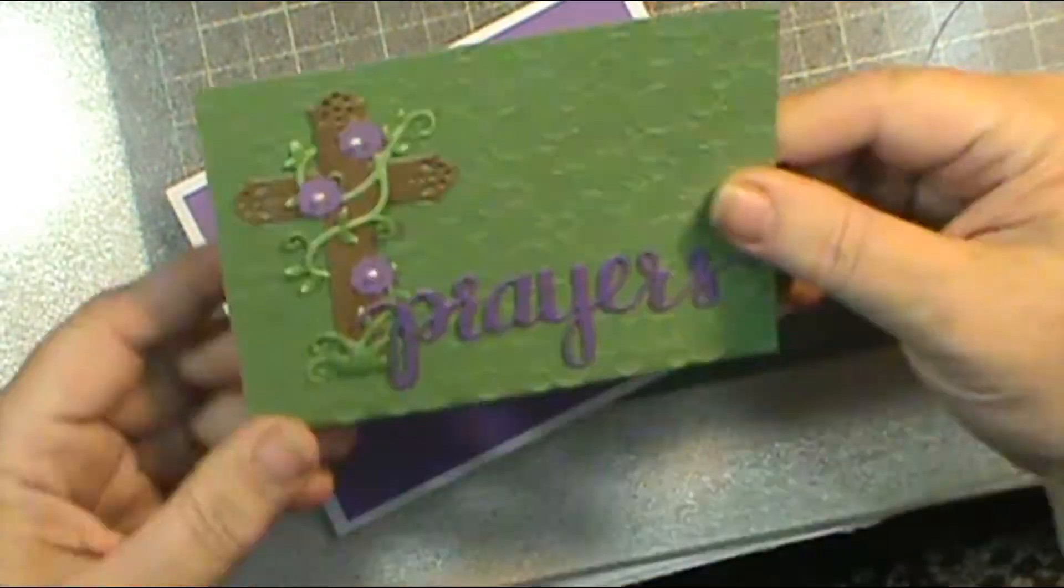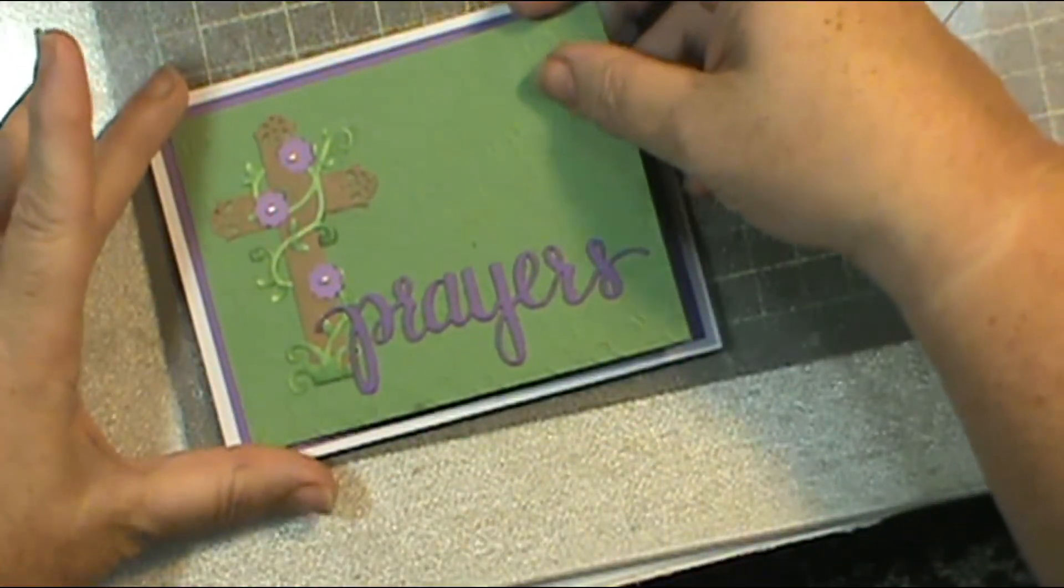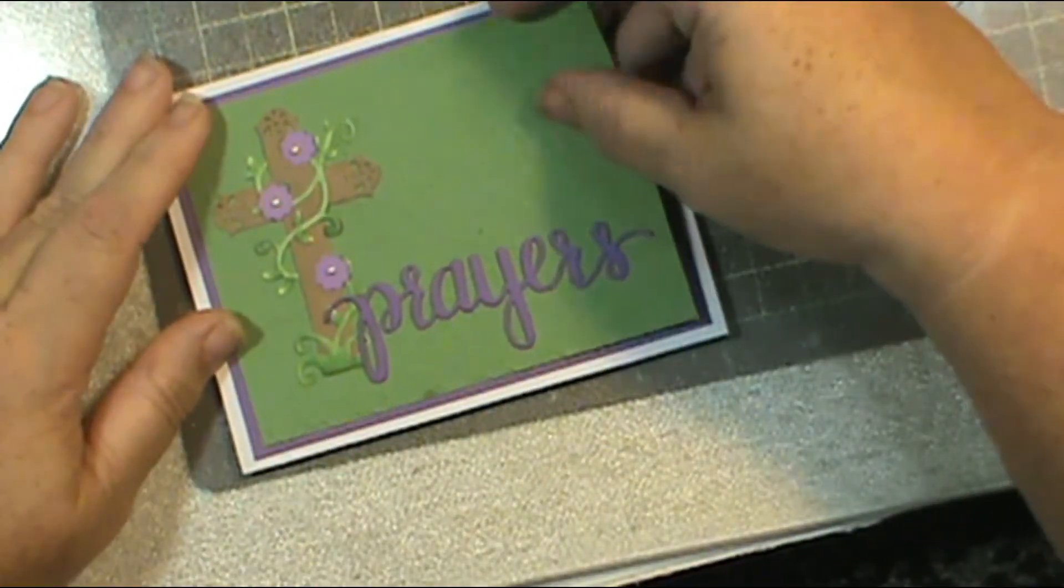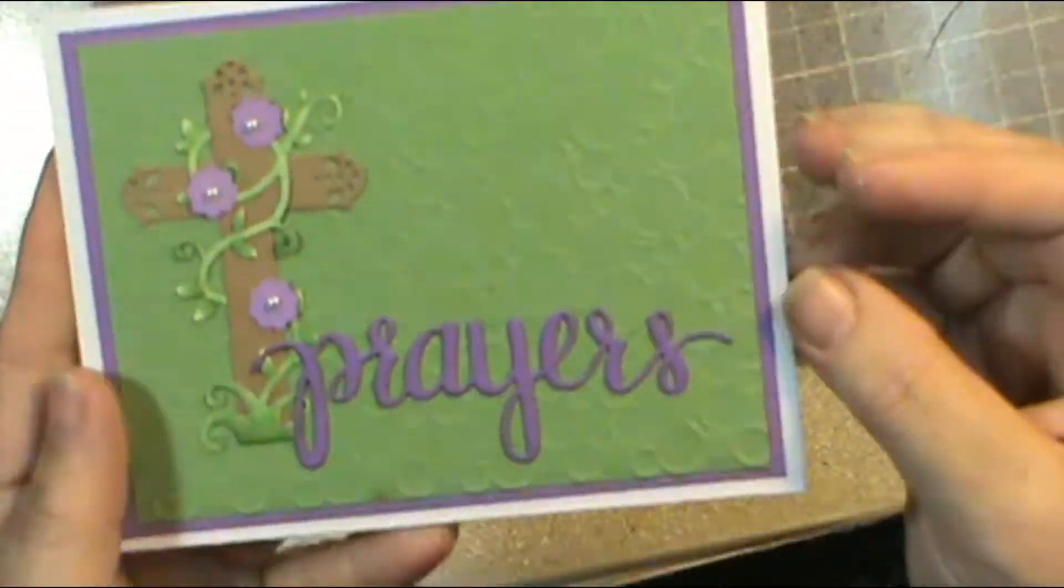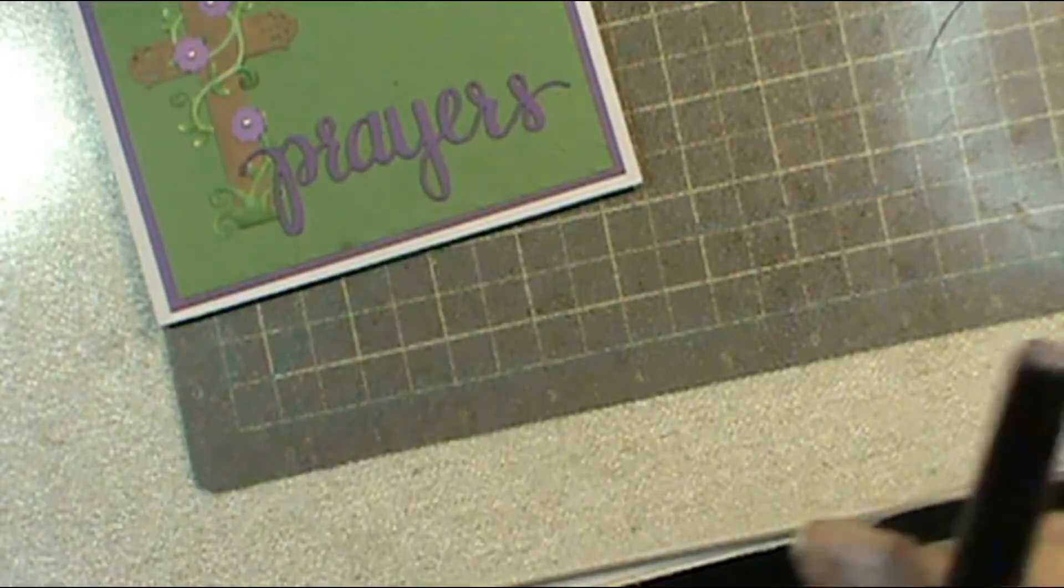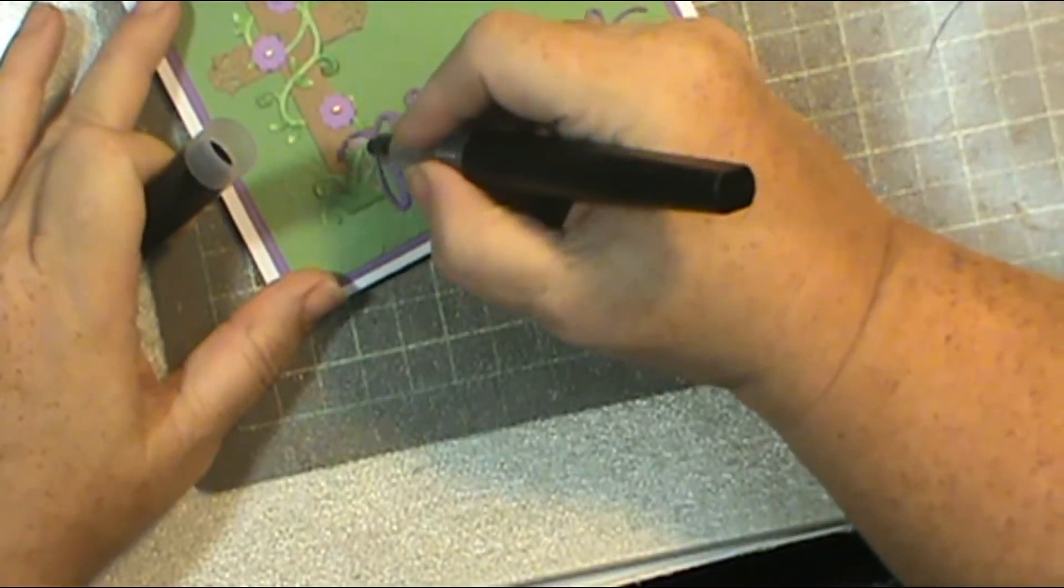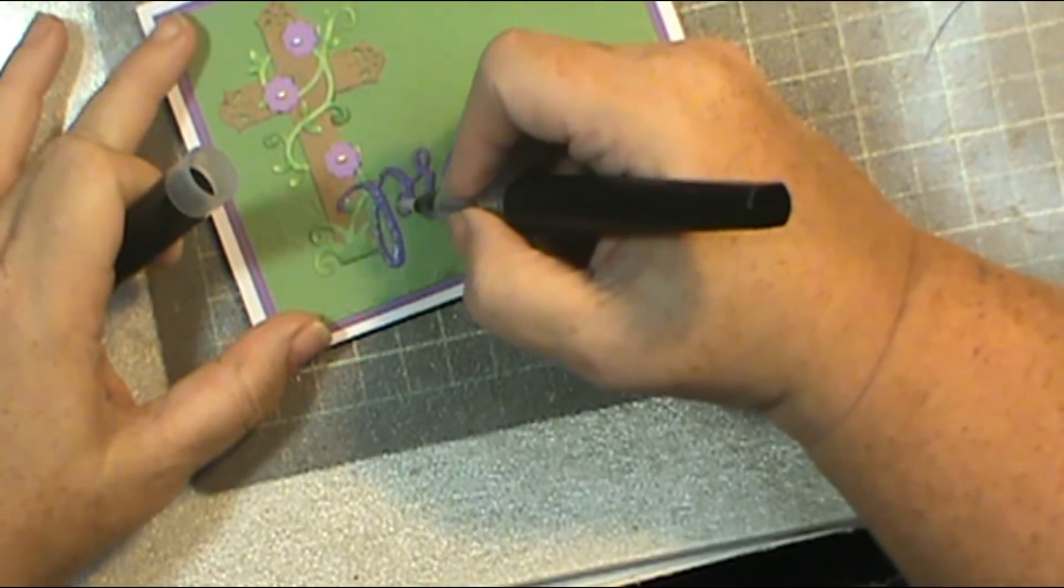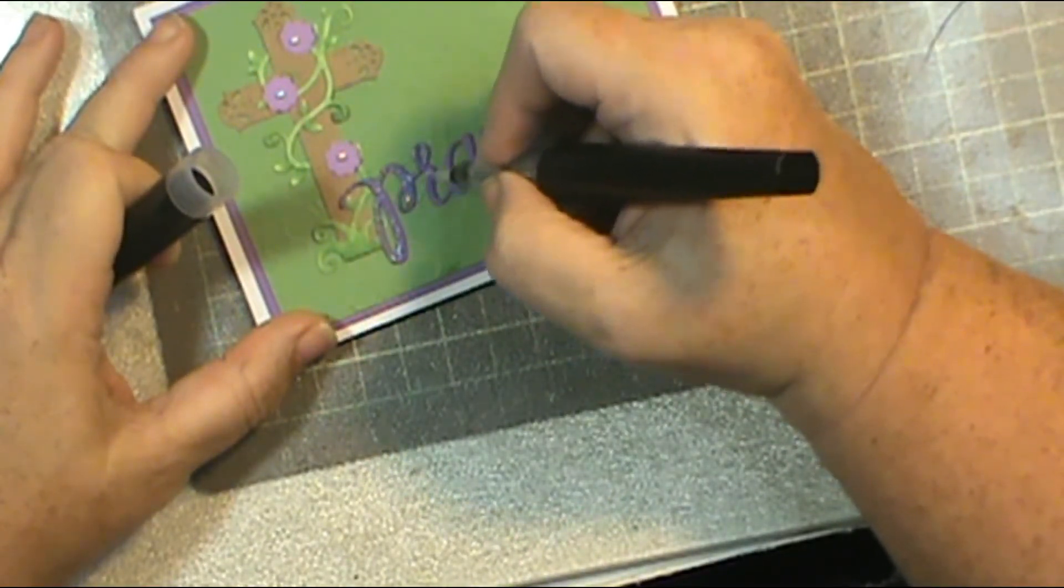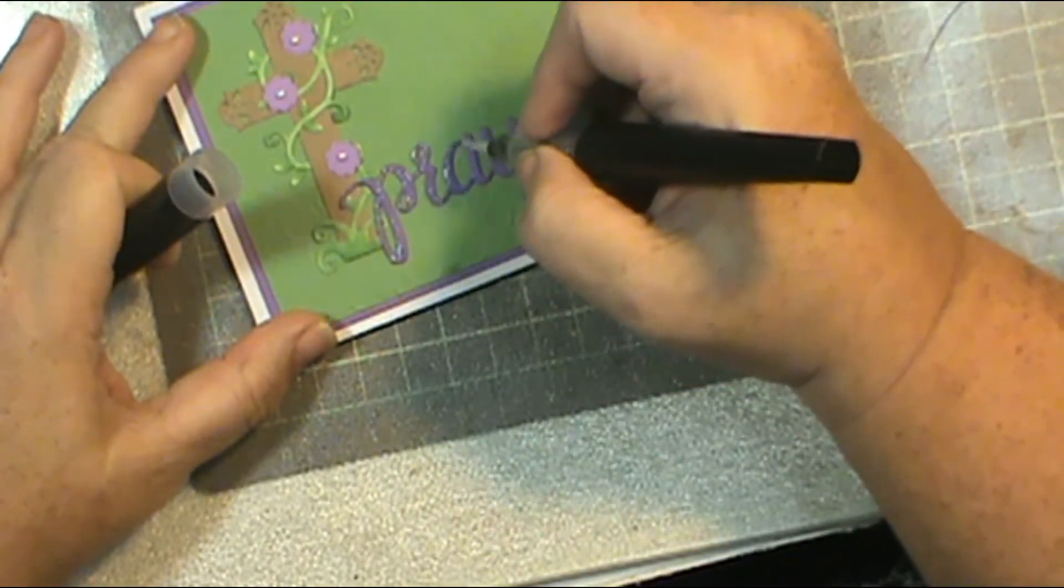I'm going to take the ATG and just put the next layer on top of the card. Again, just straight down. No dimension, no fluff, no frills, no mess. And there's the card. You can kind of see the circles in the background. It was just an embossing folder I had. I don't know why I decided to put it on that paper, but I had done it, so I used it.